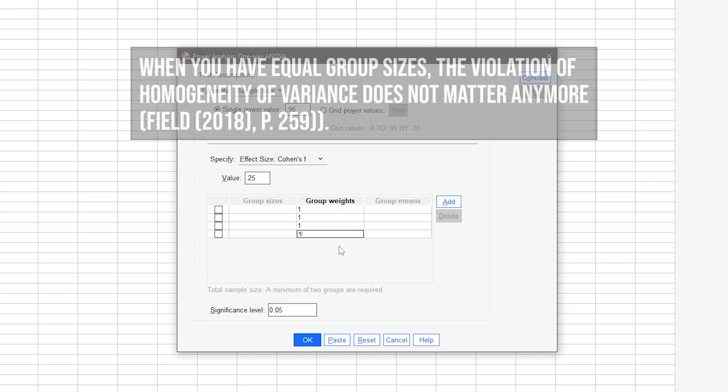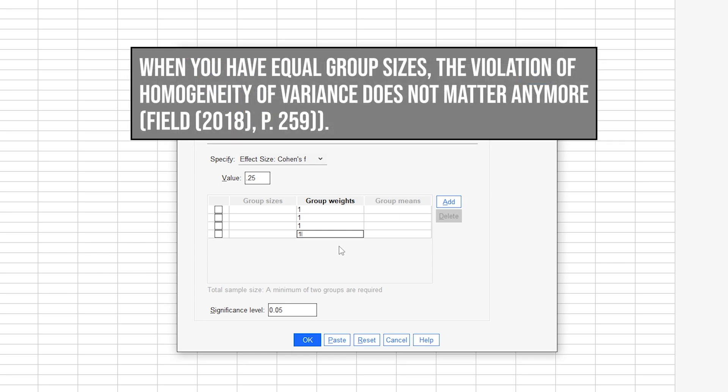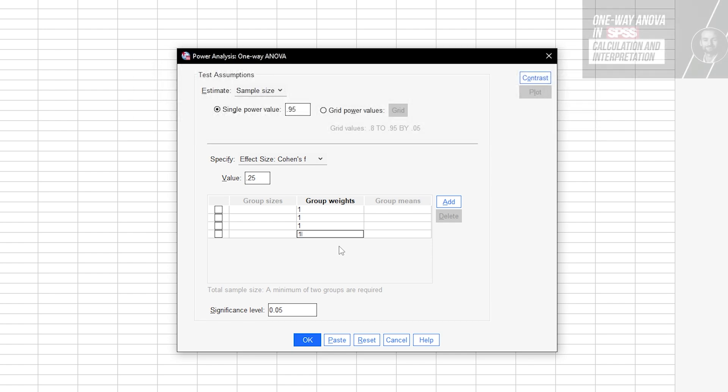A little bonus tip, try and have roughly equal group sizes when recruiting subjects or making observations. This will solve some headaches, especially when it comes to homogeneity of variances. This assumption for the ANOVA goes out the window if you have equal group sizes. You can however still correct for that, see my video on that.